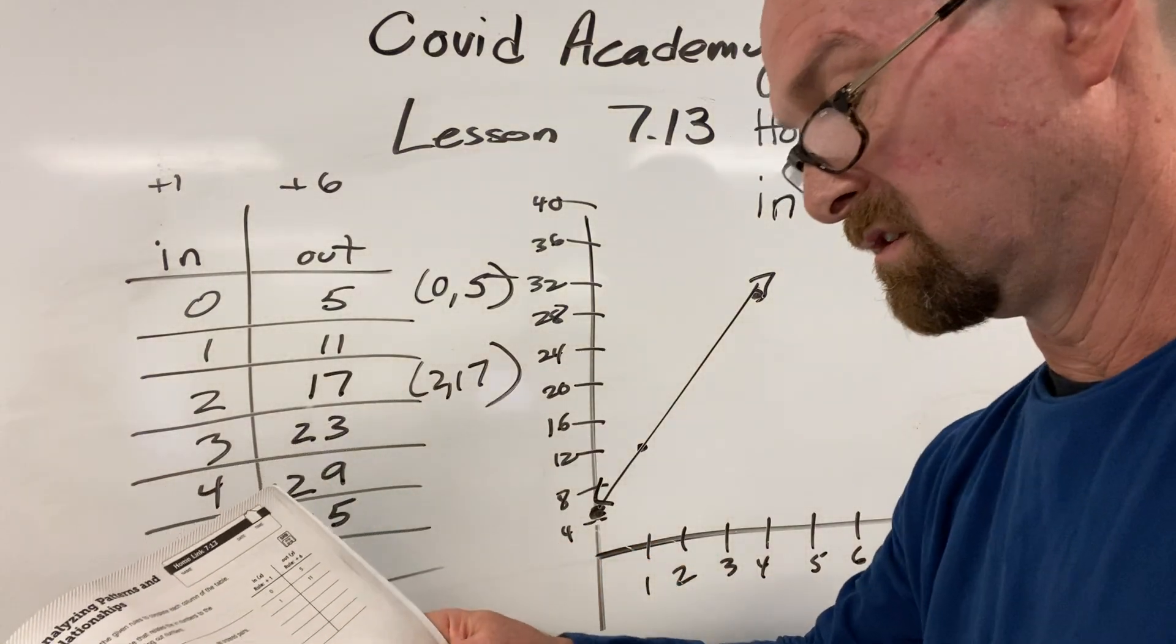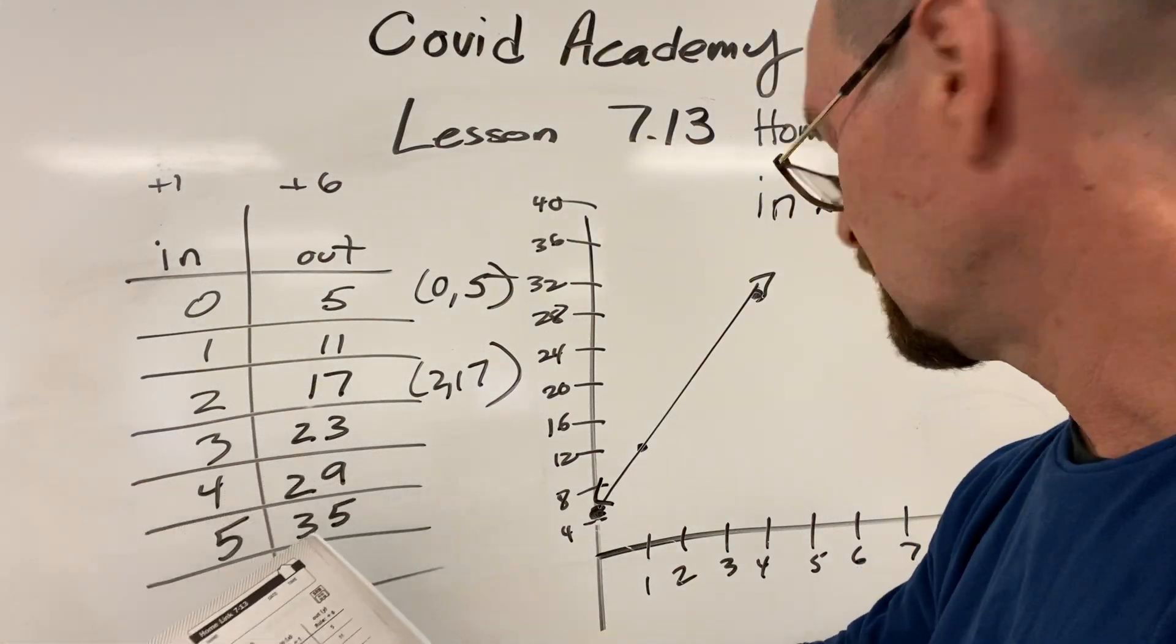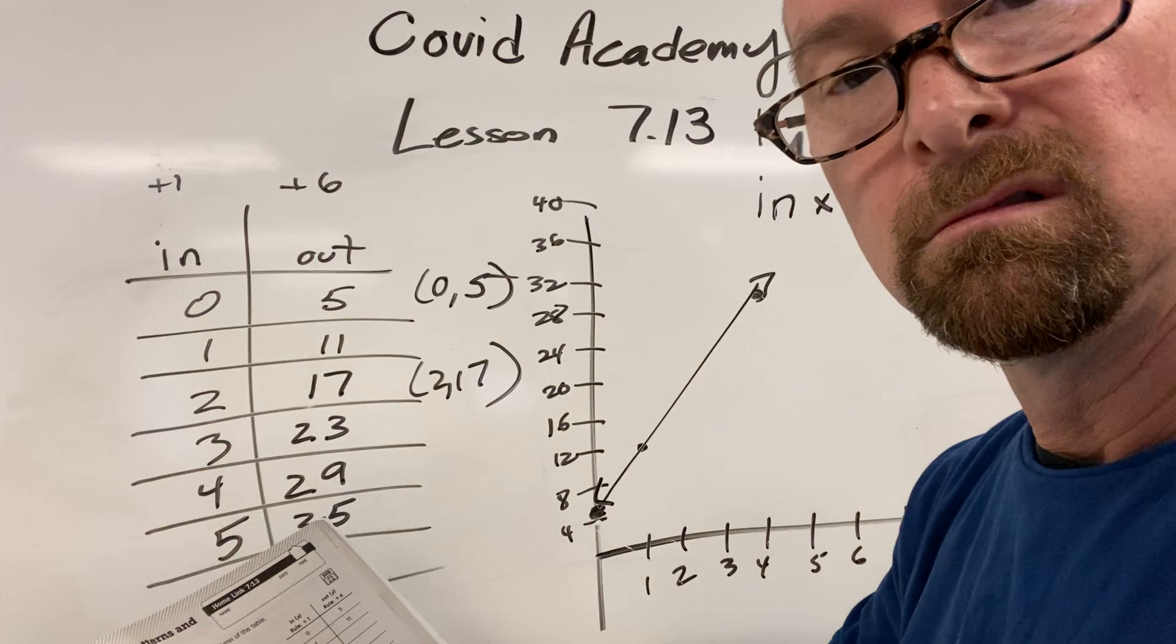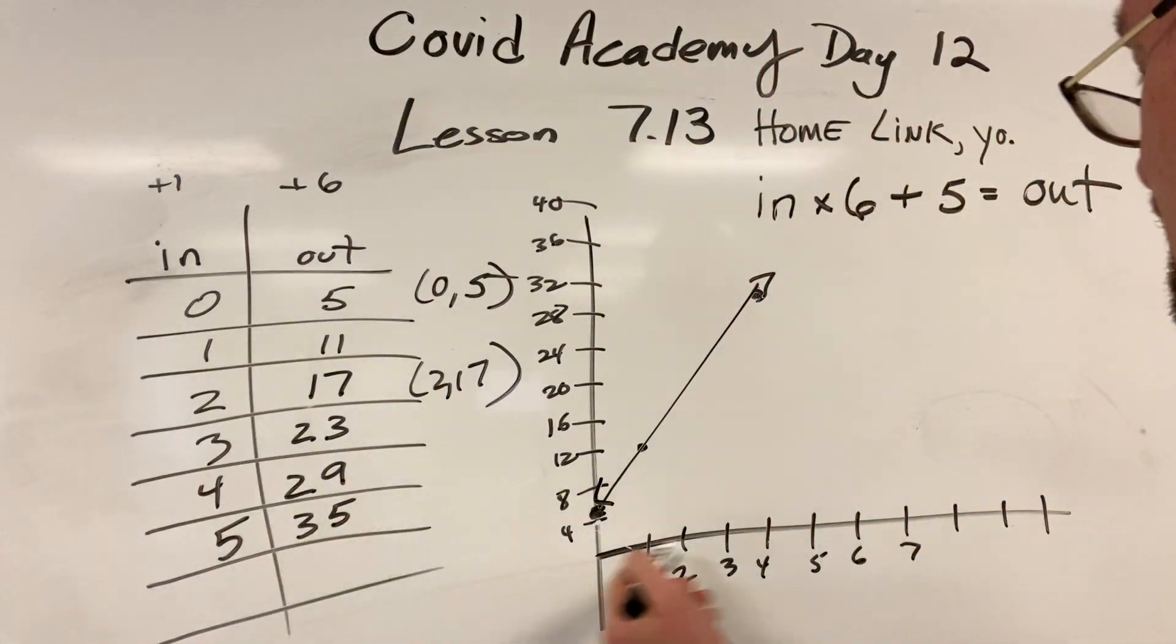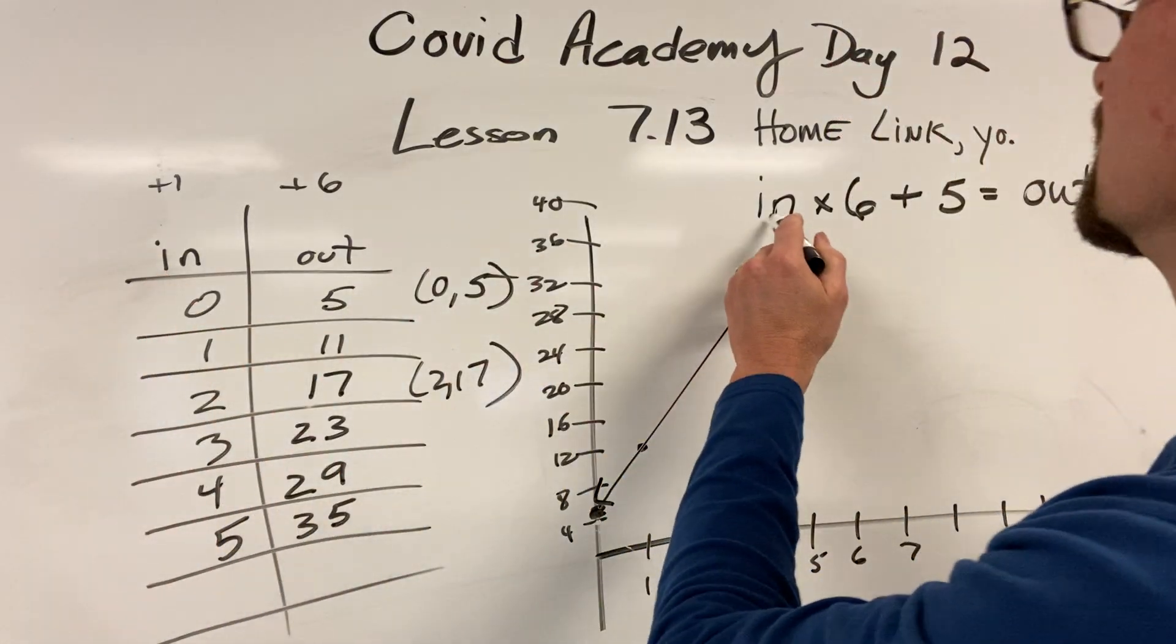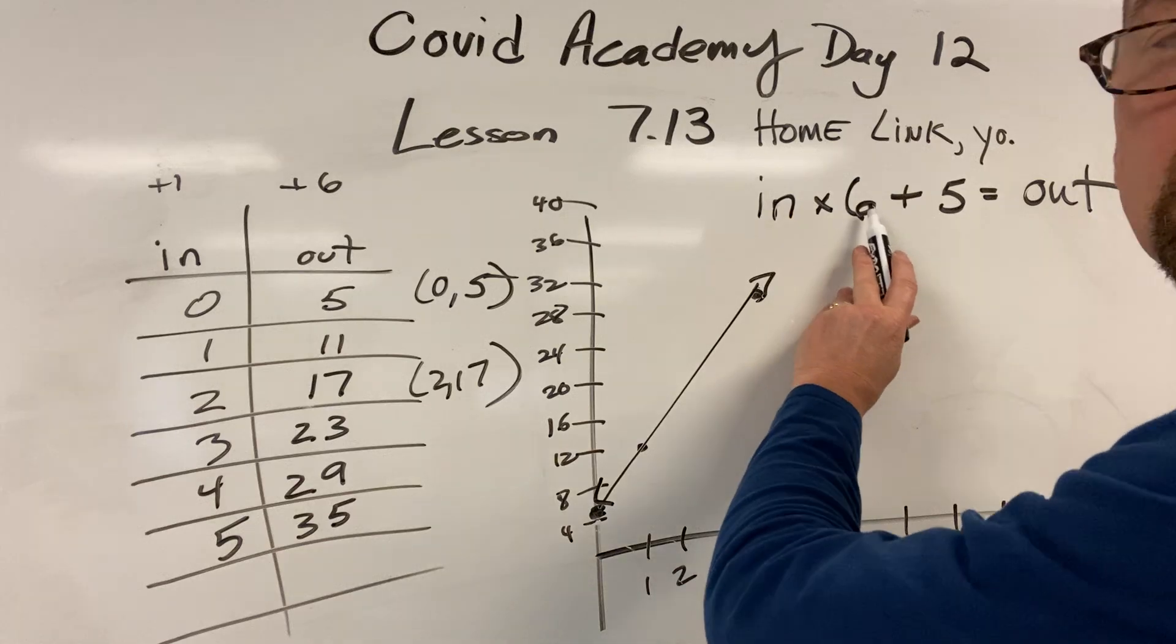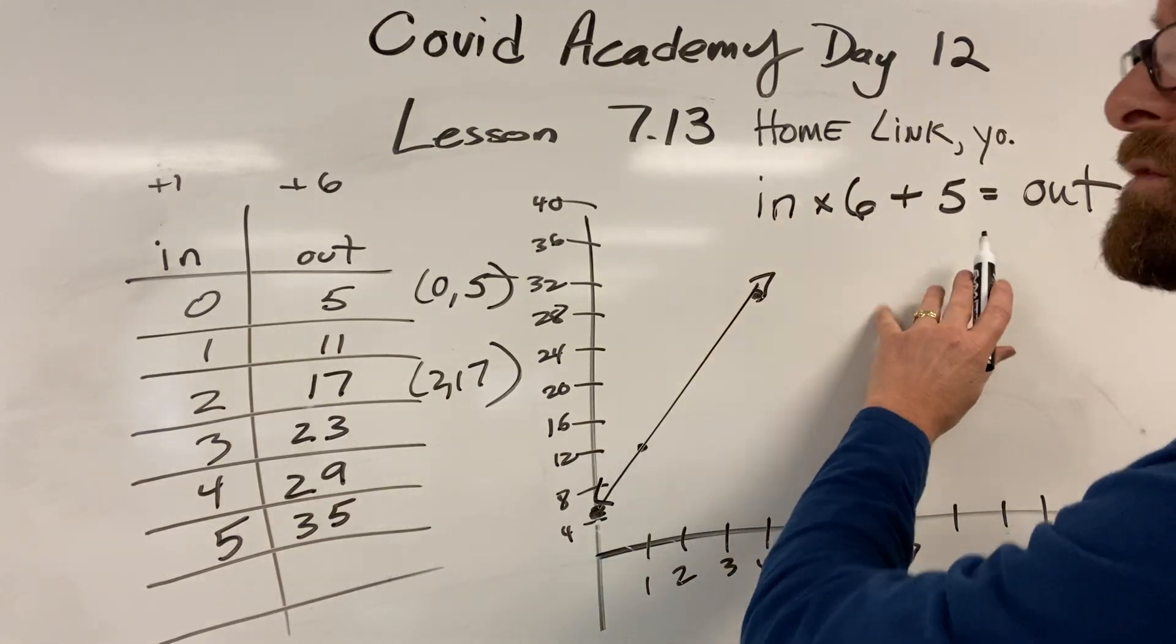Number 5. When the in is 8, what is the out? I can't really use my graph because I didn't do that. So if in is 8, I'm just going to use the rule: in times 6. So 8 times 6 is 48, plus 5.